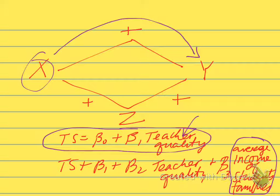But we also have an omitted variable z, the average income. We imagine that in schools where there's higher average student income, there's also teachers of higher quality, so there's a positive correlation there, and we can imagine that higher income is associated with higher test scores, so that's also a positive relationship.